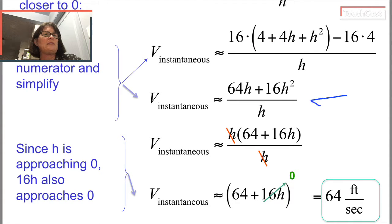Let's see what we can do here. Here I am. I have 64h plus 16h squared over h. If you can imagine factoring out the h, right, that's what's happened in the numerator. Now the h in the numerator and the h in the denominator cancel.